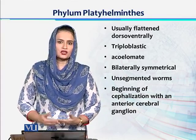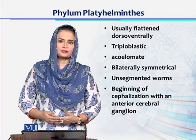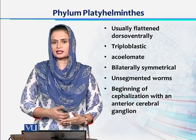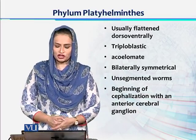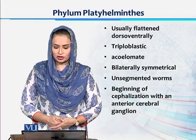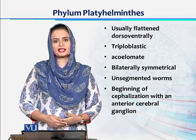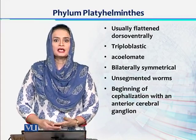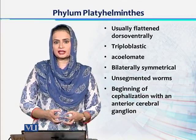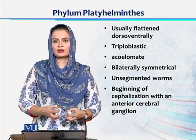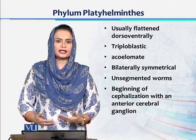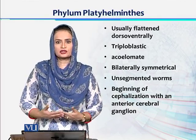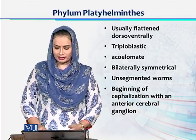Body symmetry is bilateral and these worms are unsegmented, so the whole body is one segment. A nervous system has been observed in this group for the first time. On the anterior side of the body, there is a clustering of neurons called ganglia. Ganglia formation is seen for the first time in invertebrates in Phylum Platyhelminthes.